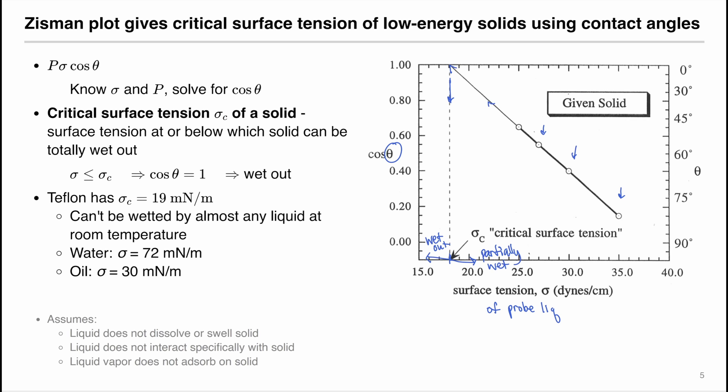We can obtain this data because we can measure the surface tension force, and if we know the surface tension of the probe liquid as well as the perimeter of the object using the partial immersion method, we can solve for the contact angle cosine theta. For example, Teflon has a critical surface tension of 19 mN/m, so it cannot be wet out by almost any liquid at room temperature — water has a surface tension of 72 and oil about 30, both greater than Teflon's critical surface tension. Because of this non-wetting property, Teflon is commonly used for non-sticking coatings, such as on non-stick pans in the kitchen.